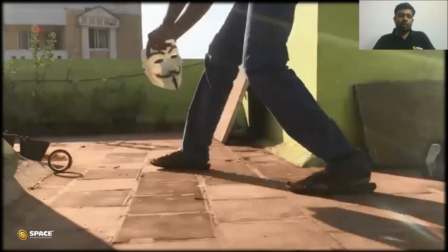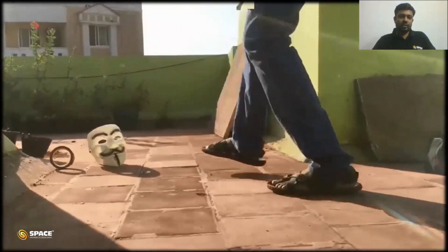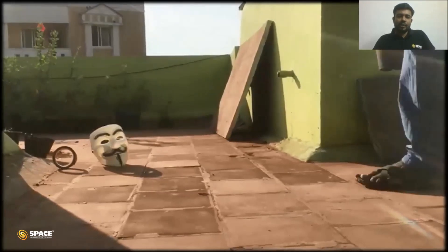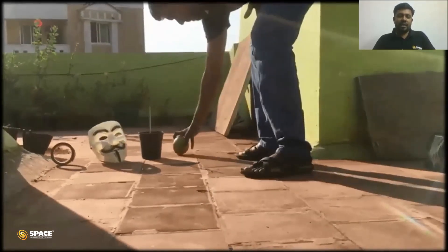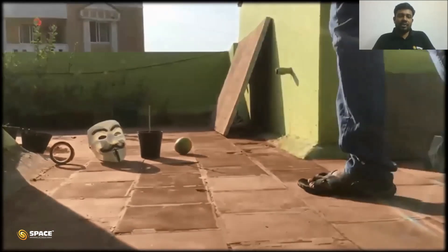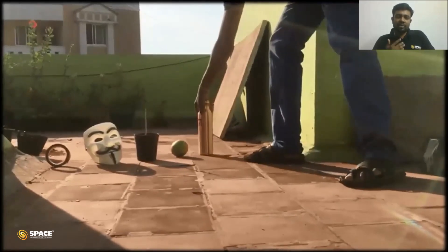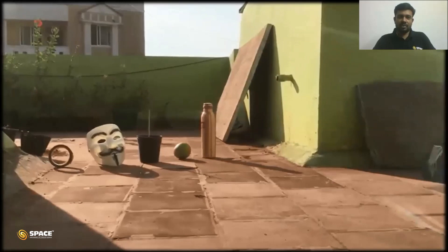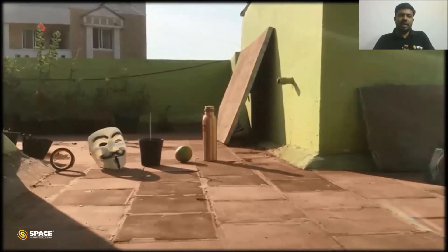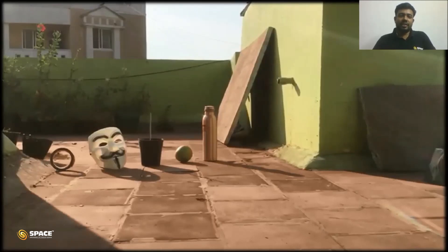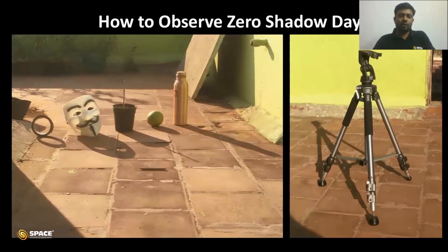Today around 3 PM, I kept some objects which cast a shadow. You can observe the length of the shadow in the evening. Similarly, you can set up objects tomorrow in your terrace or any open area and observe the shadow length around 11:30 AM. As noon approaches, the shadow length decreases. At one point, the shadow completely disappears. During that time, you can click photographs and take videos to celebrate this astronomical event and share them with your friends. Here is an example of how to set up the objects — we have a tripod and objects here. Tomorrow I will do the same setup and observe what happens to the shadow at local noon time.